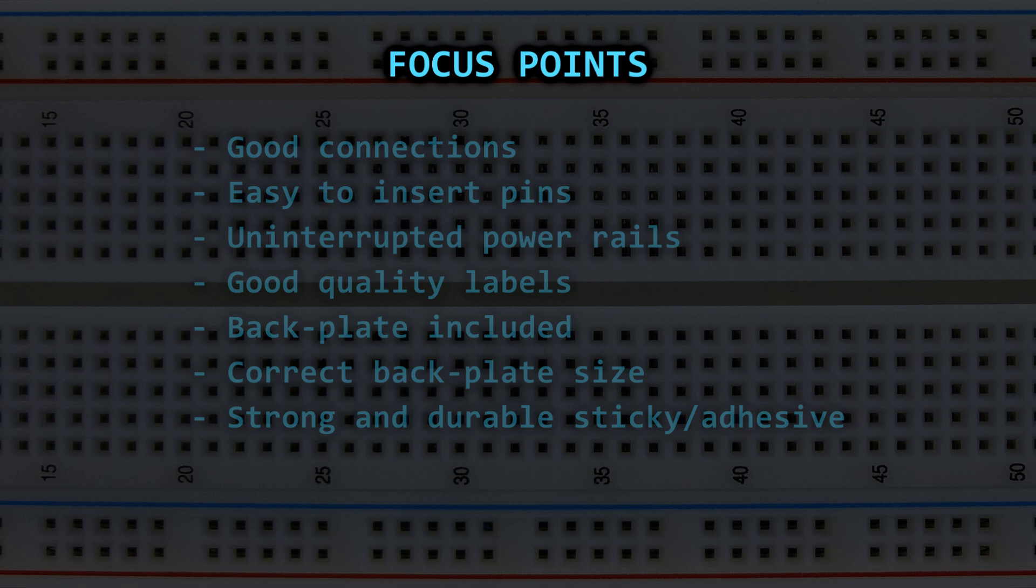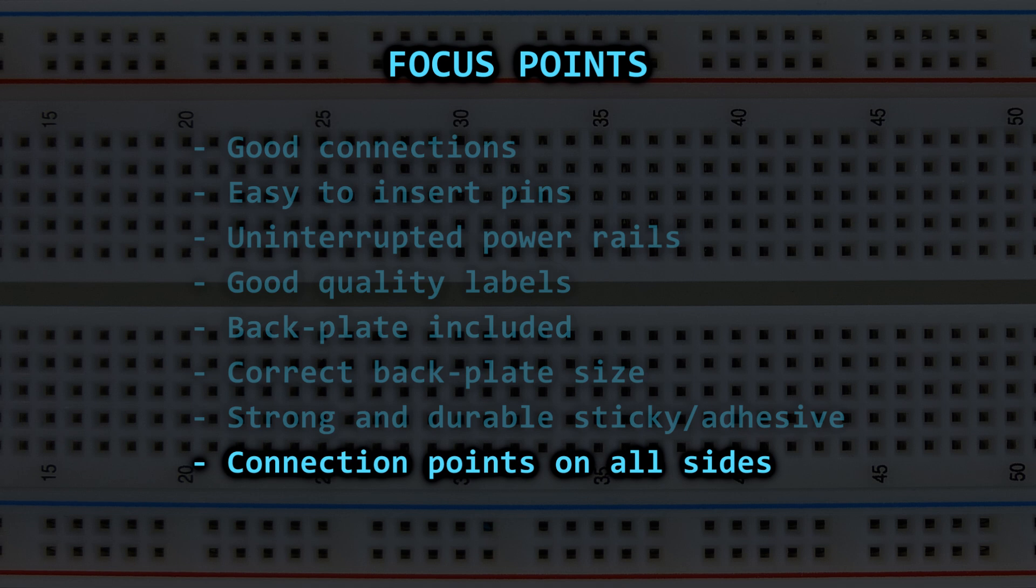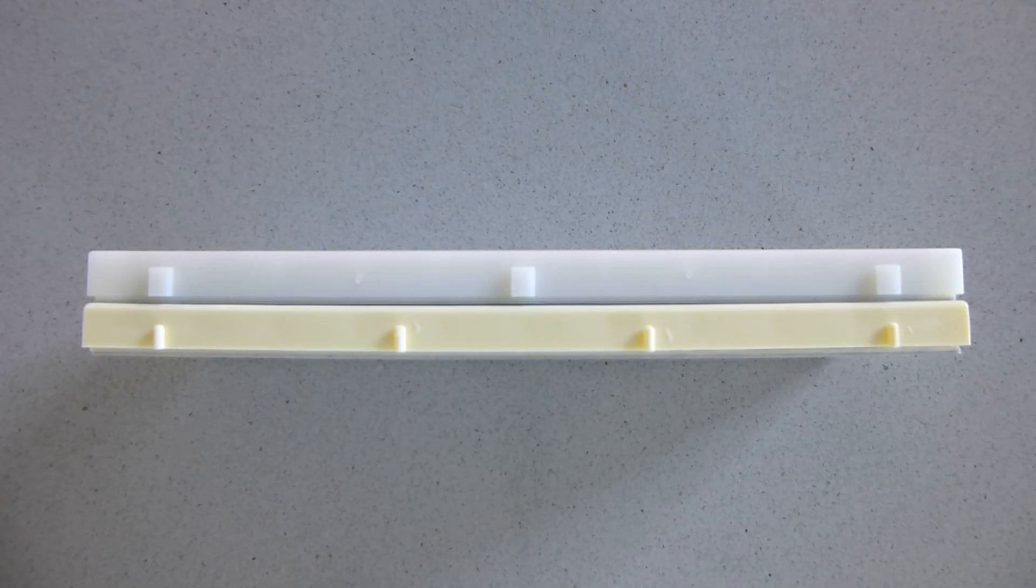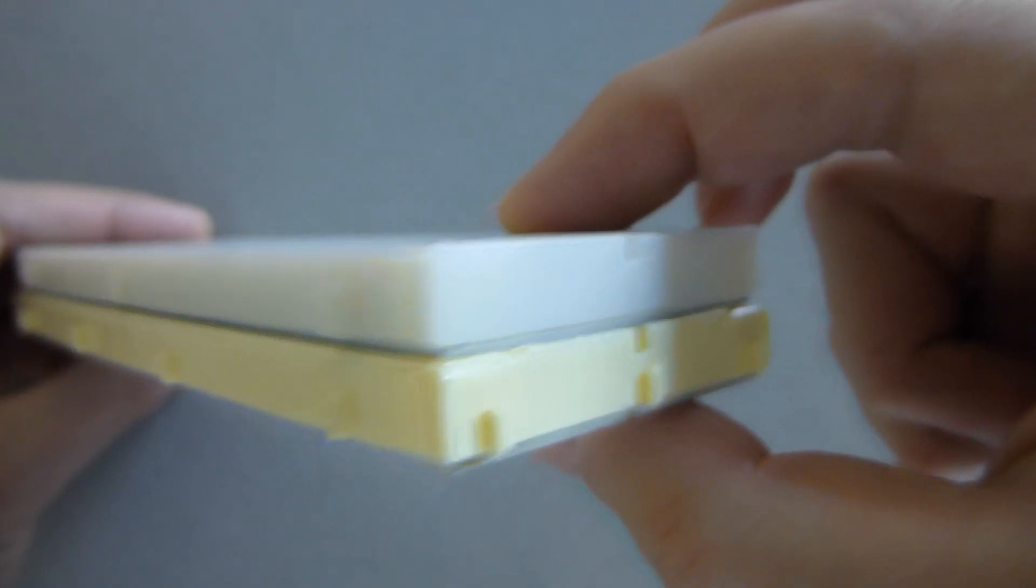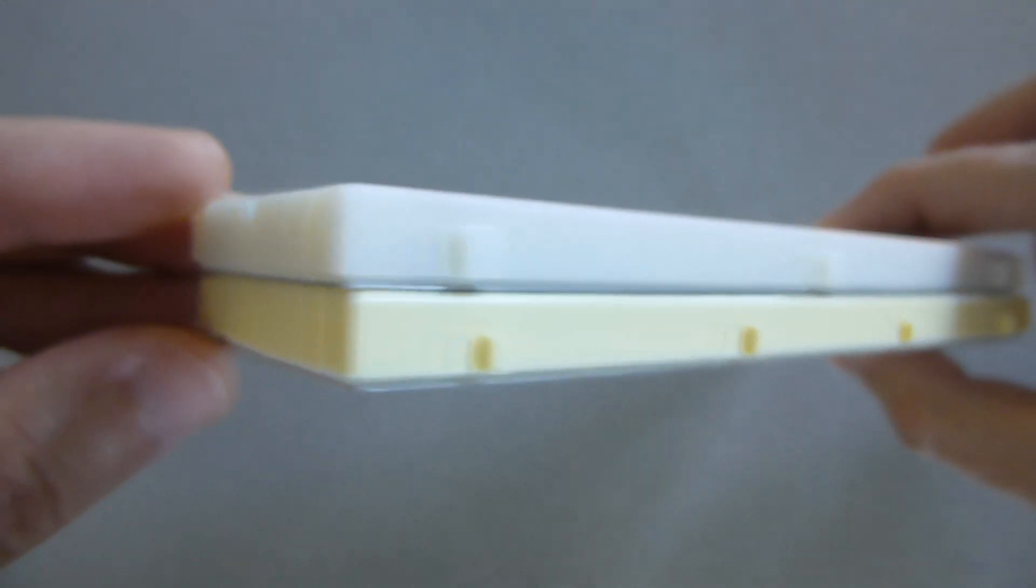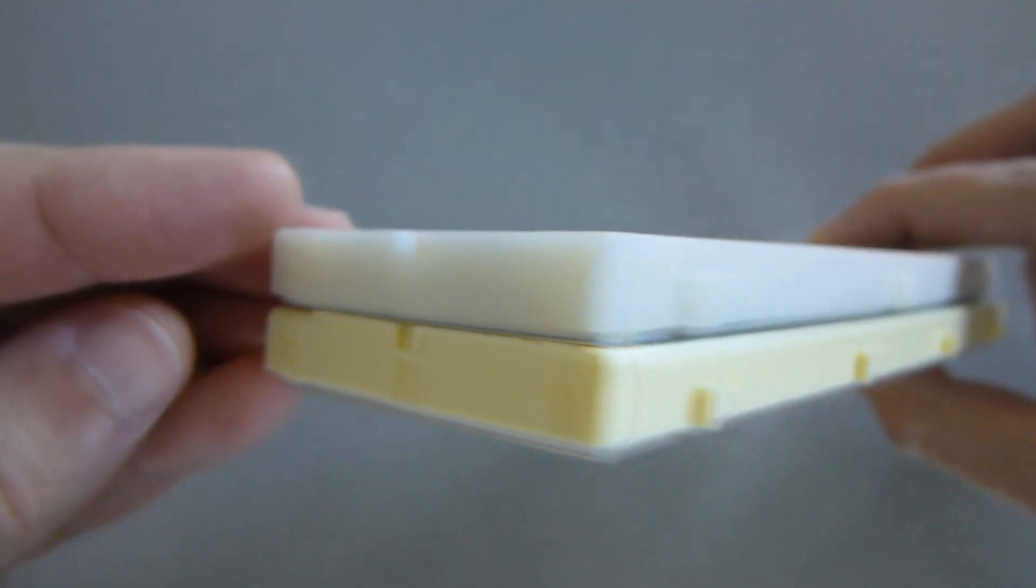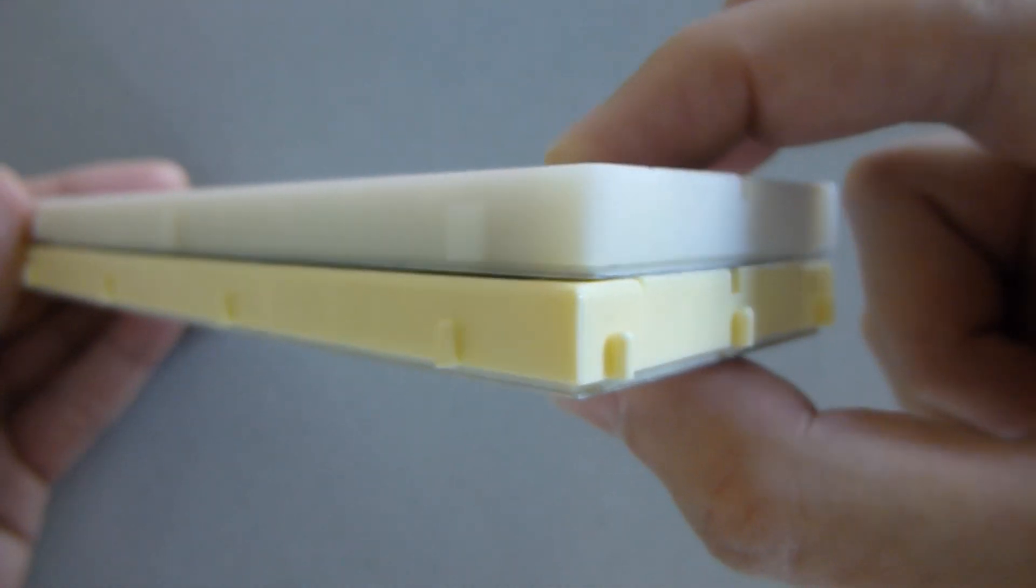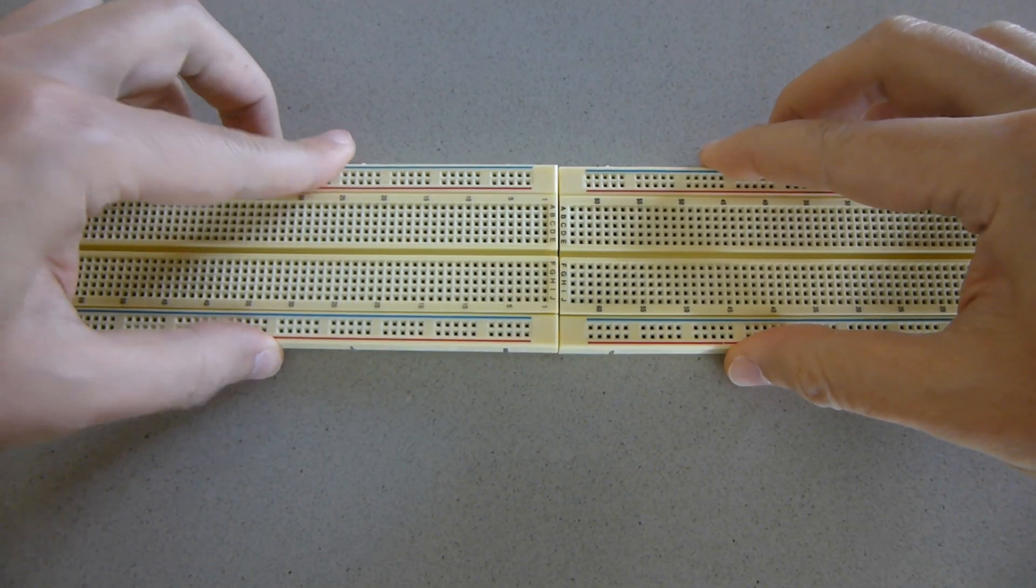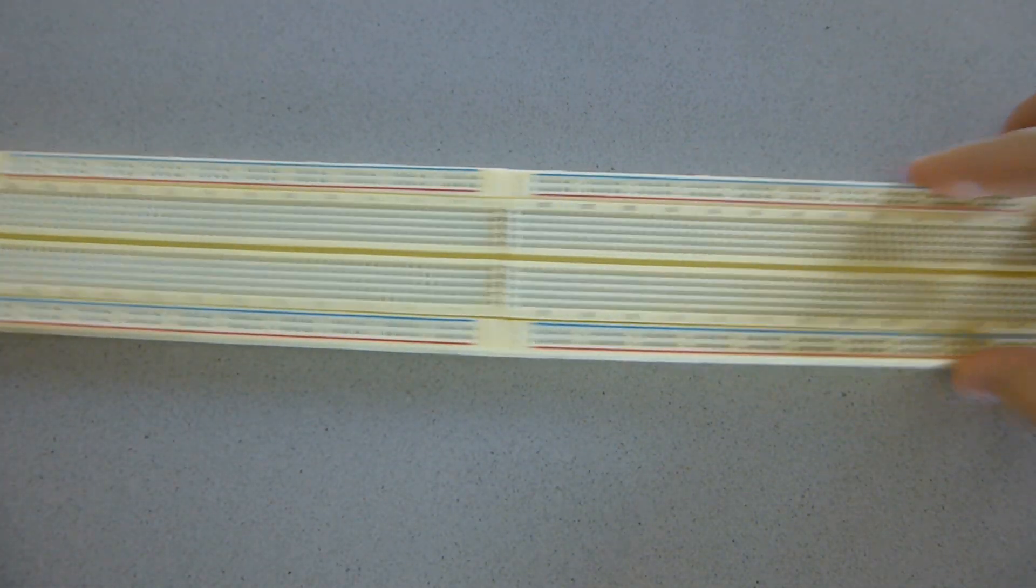And finally, the last thing I consider to judge the quality of a breadboard is the type of connection points to join multiple breadboards. I've seen two types and in my opinion both work well, but most breadboards allow locking other breadboards in only two sides, while ideally it should support in any direction. This is not a big deal, but still something to consider.